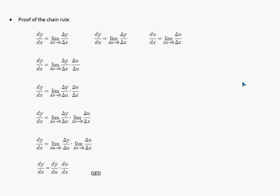So we're going to look at the proof of the chain rule. The chain rule is what we use to take the derivative of a composite function. And a composite function is when a function is embedded inside of another function.